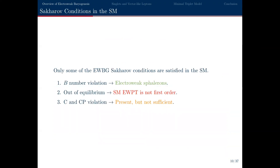So why doesn't this work in the standard model? While we do have electroweak sphalerions, the electroweak phase transition isn't a first-order phase transition — it's a crossover. And even if it were first-order, the amount of CP violation present in the standard model isn't sufficiently large to explain the observed asymmetry. So you need beyond-the-standard-model physics.